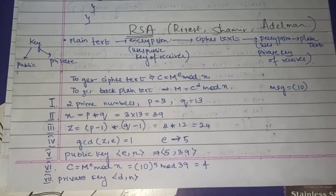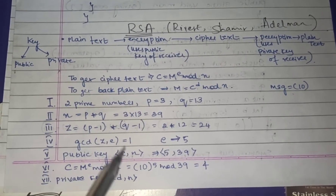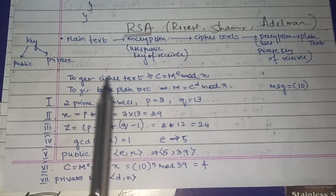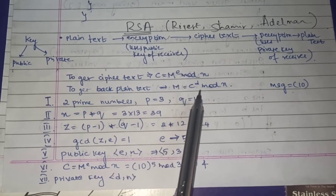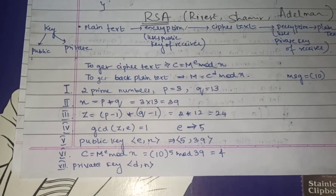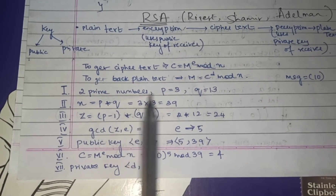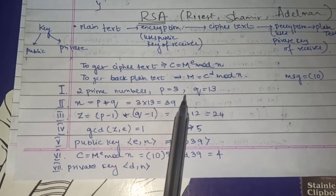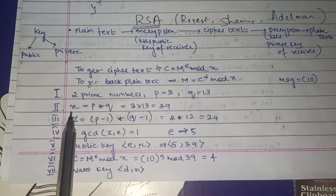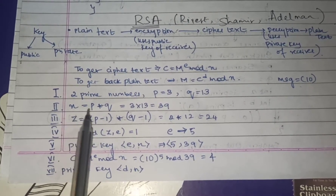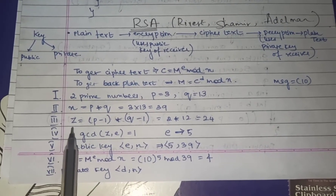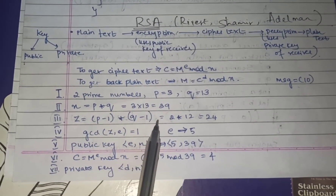In this program, to get the ciphertext you use the formula: c = m^e mod n, and to recover the plain text: m = c^d mod n. First, take two prime numbers, say 3 and 13, initialized to p and q. Then find n (the modulus) as p * q = 3 * 13 = 39, and z = (p-1)*(q-1) = 2*12 = 24.